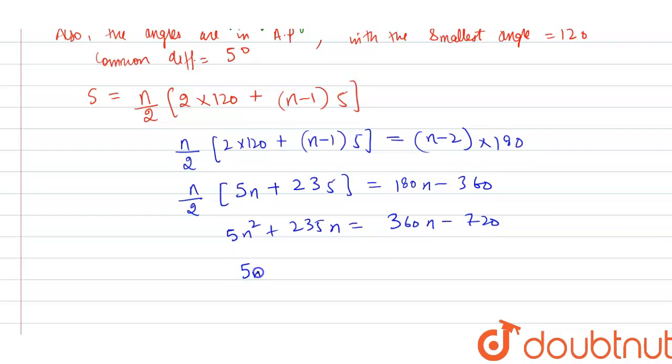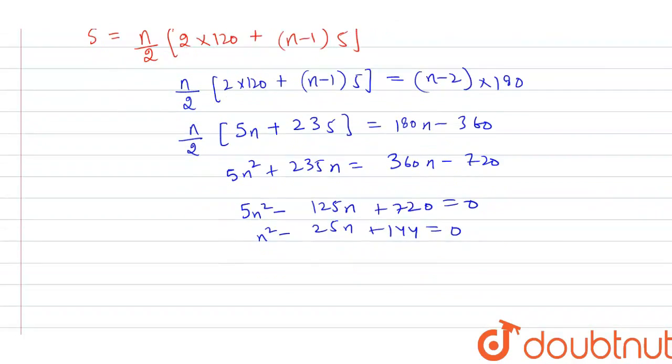After solving, we get 5n² - 125n + 720 = 0.